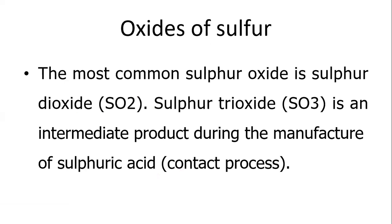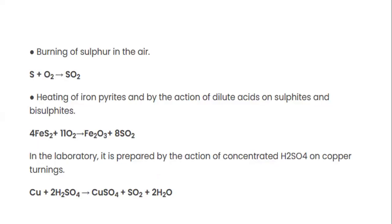Oxides of Sulfur. The most common sulfur oxide is sulfur dioxide. Sulfur trioxide is an intermediate product during the manufacture of sulfuric acid by the contact process. Burning of sulfur produces sulfur dioxide, and copper reacts with sulfuric acid to produce sulfur dioxide.